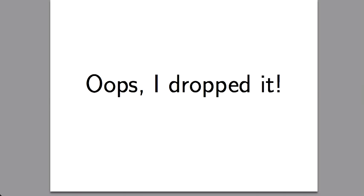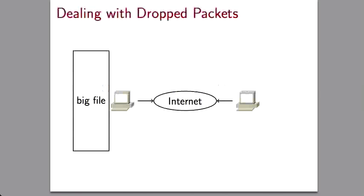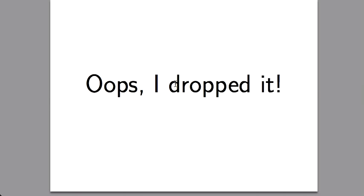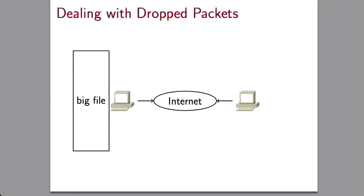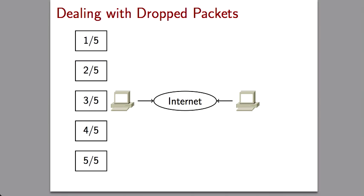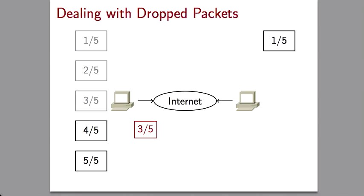Another problem: when you're sending a packet from one router to another, it could get dropped — it could disappear because of noise on the line, faulty routers, or whatever. We want a way to fix that. The fix for dropped packets works like this: you take a big file, break it up into little packets, and number each one — say, one of five, two of five, three of five. You send the first packet and it arrives okay. You send the second and it gets lost somewhere in the internet — you don't know that yet.